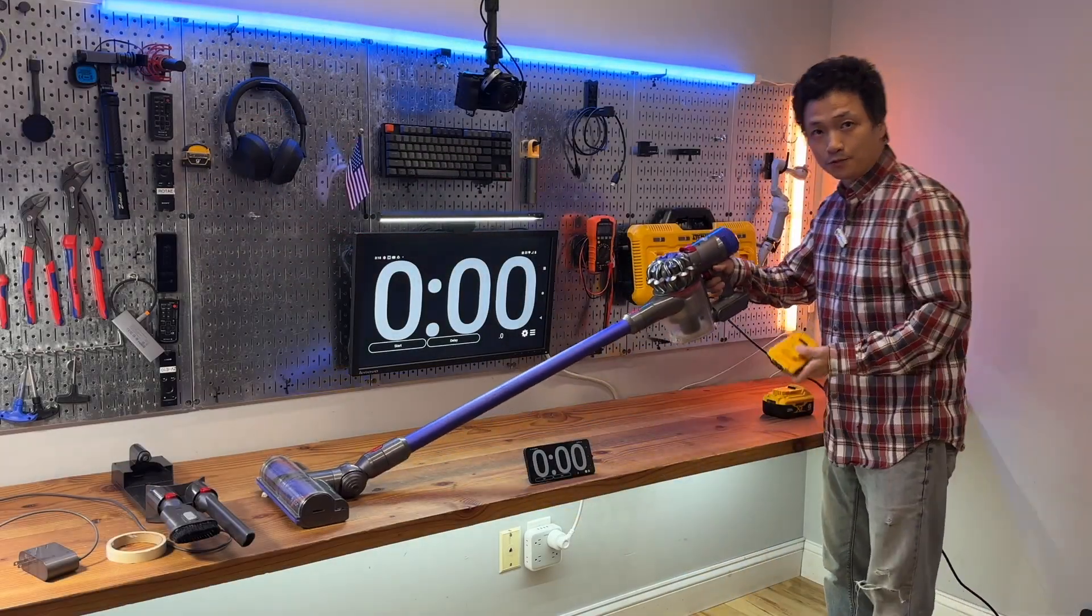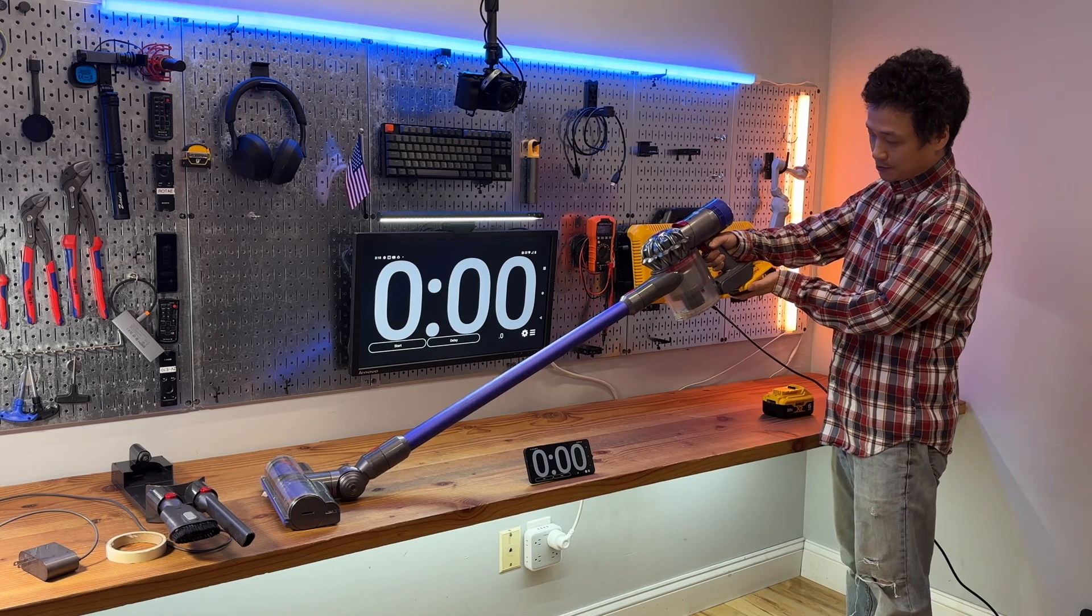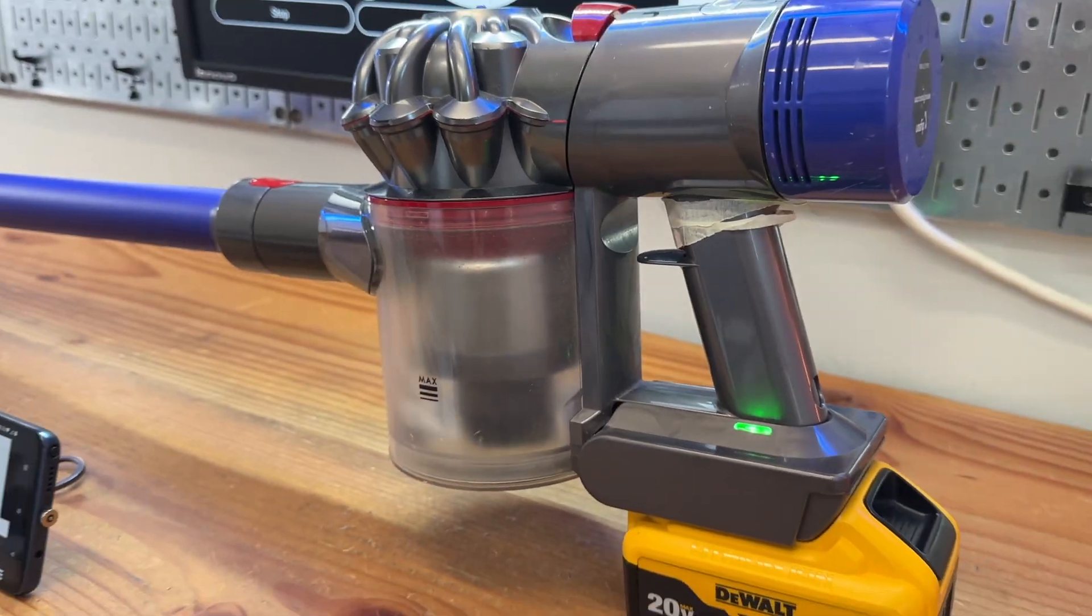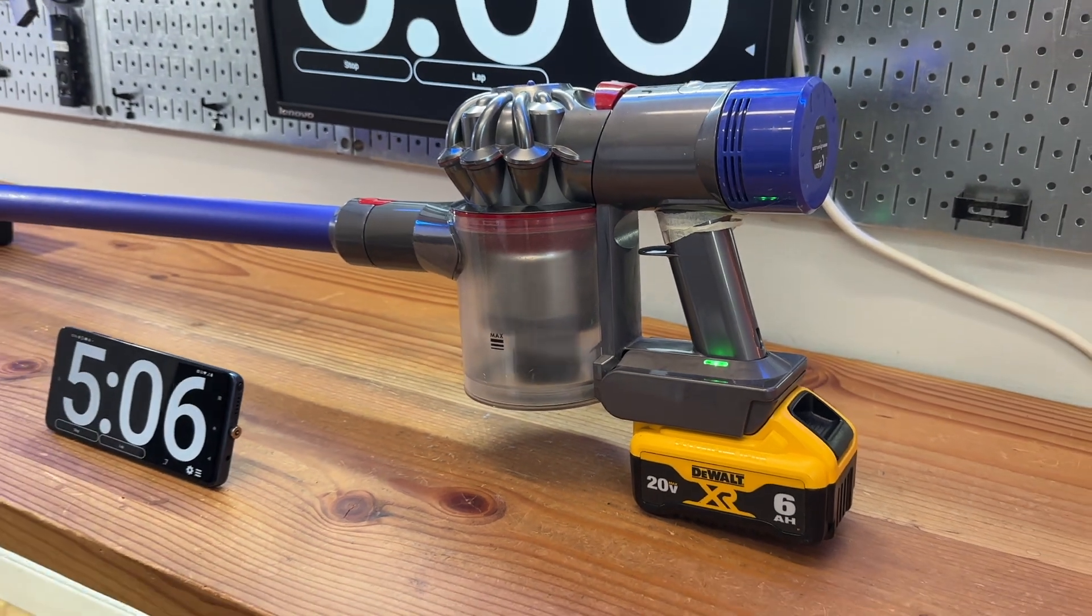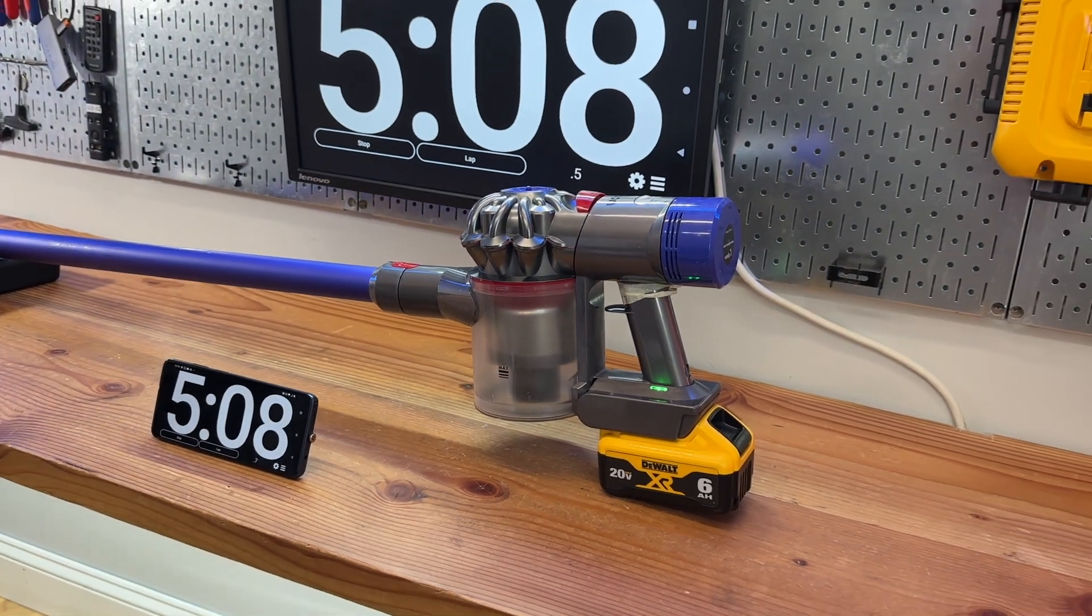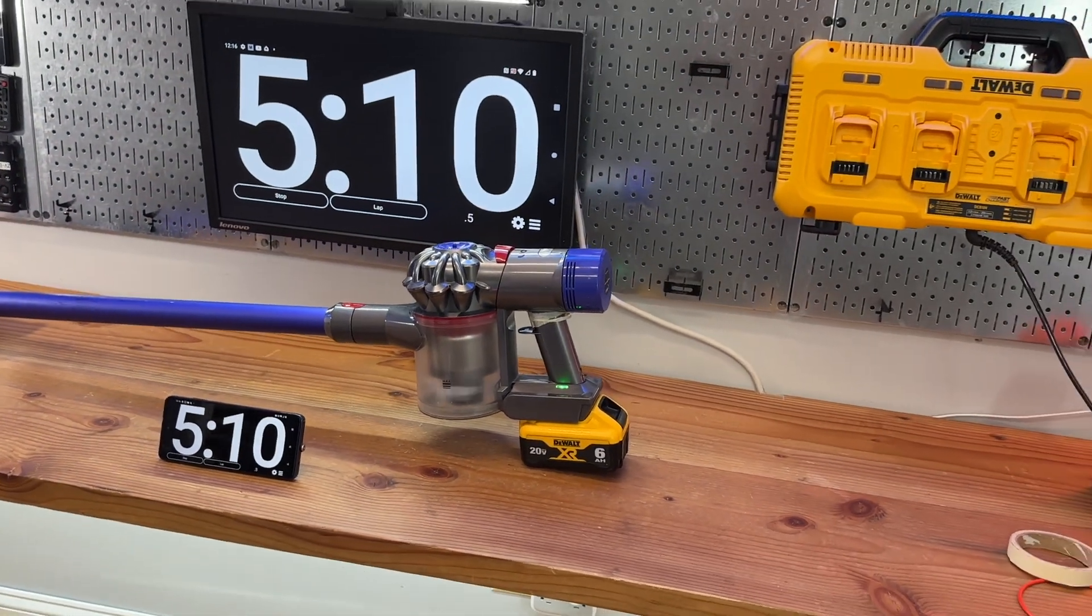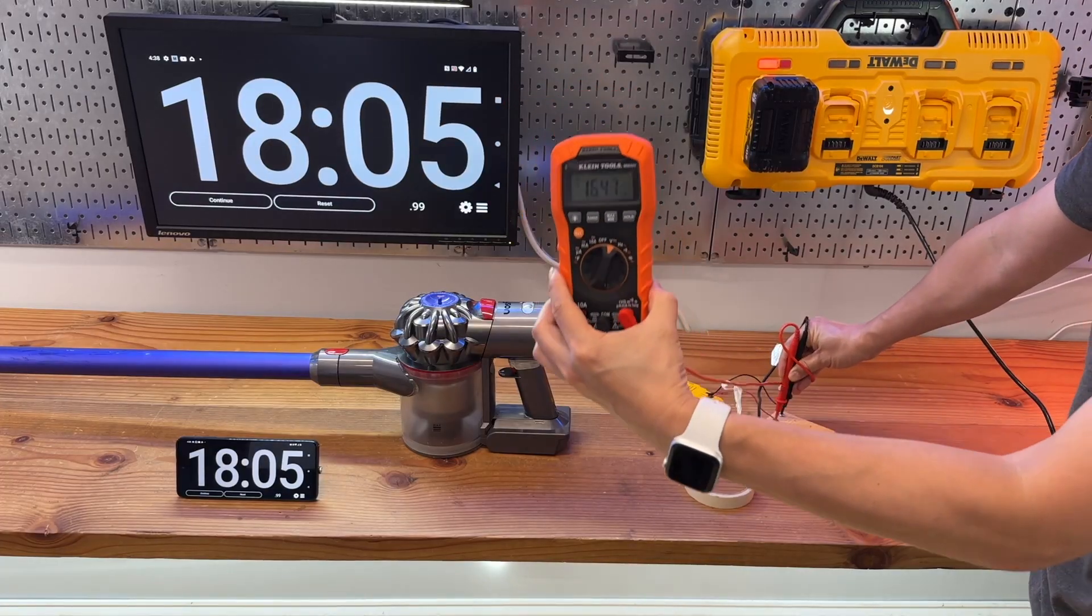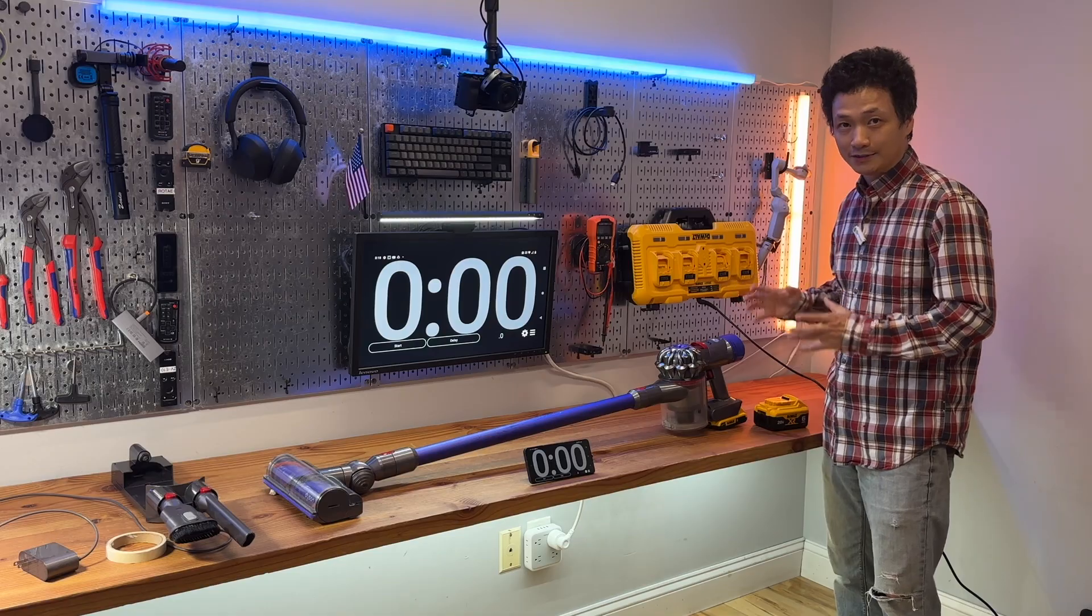I'm going to do four battery runtime tests using the DeWalt 2A and 6A battery packs and show you everything you need to know about using the DeWalt battery adapter for the Dyson V8. Voltage will be measured before and after each test to make sure the battery pack does not get fully discharged.